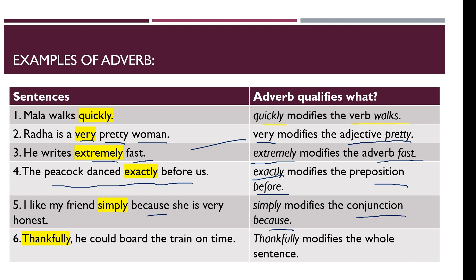Number five involves the word 'simply' modifying the conjunction 'because.' 'Because' is a conjunction — it means a simple reason. So here, 'simply' is the adverb that modifies the conjunction 'because.'